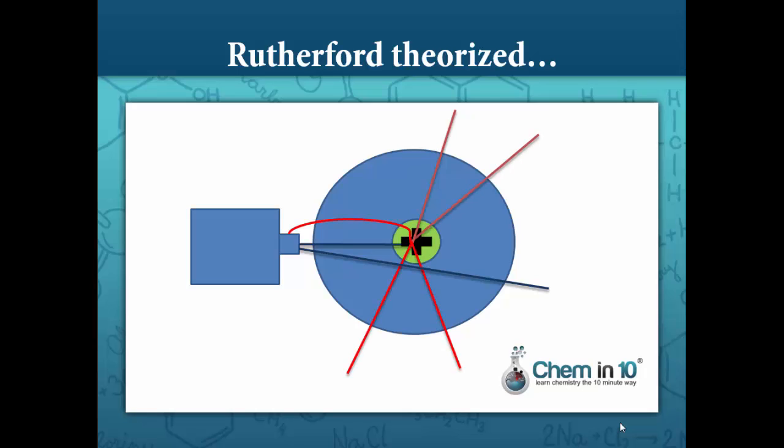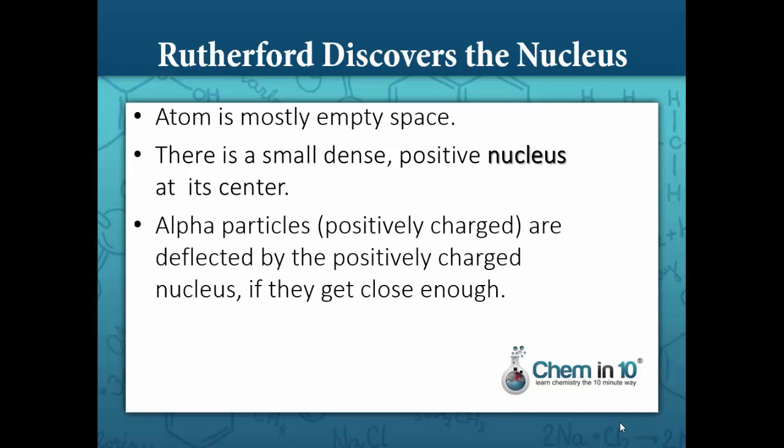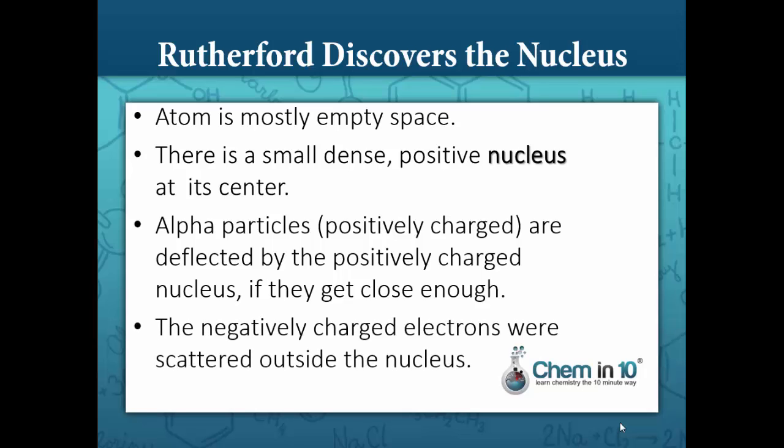And if it hit it dead on, of course, it would bounce right back at the source. So Rutherford theorized that the atom is mostly empty space, but there's a small dense positive center called the nucleus. The electrons he theorized were scattered outside the nucleus.